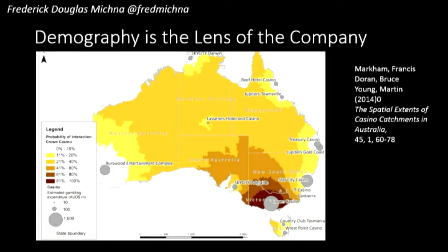This map is particularly interesting — it represents where in Australia the Crown Casino in Melbourne gets its population from. 81 to 100% of people within inner regional Victoria have gone to the Crown Casino. Compare this to any other casino in the country and you'll have a much lower rate of incidence. Even from far north Queensland, 10% of that population has visited that casino. It gives a rough estimation of the distribution of harm, and it can be the lens of the company and also the lens of people who don't like what those companies are doing.